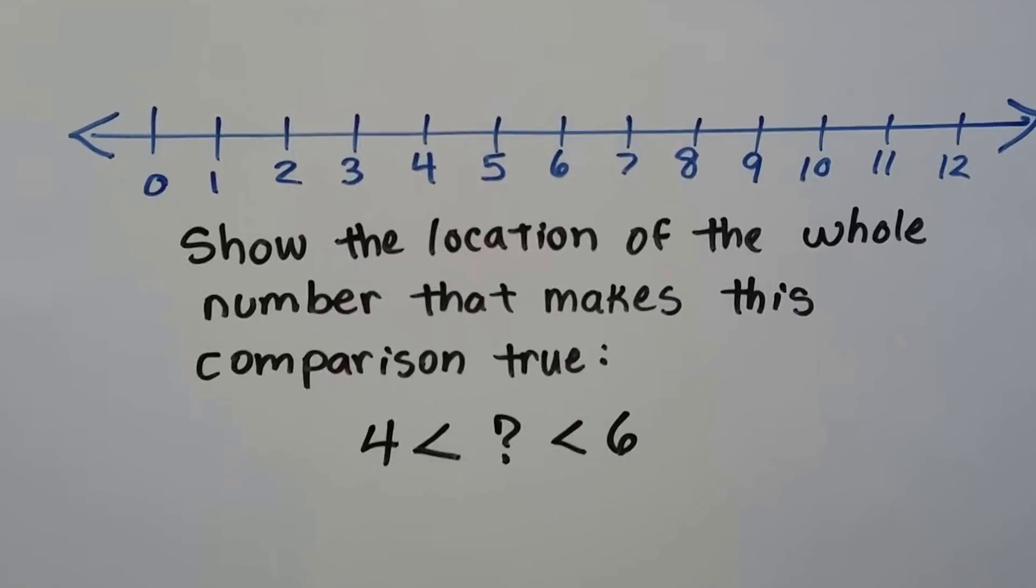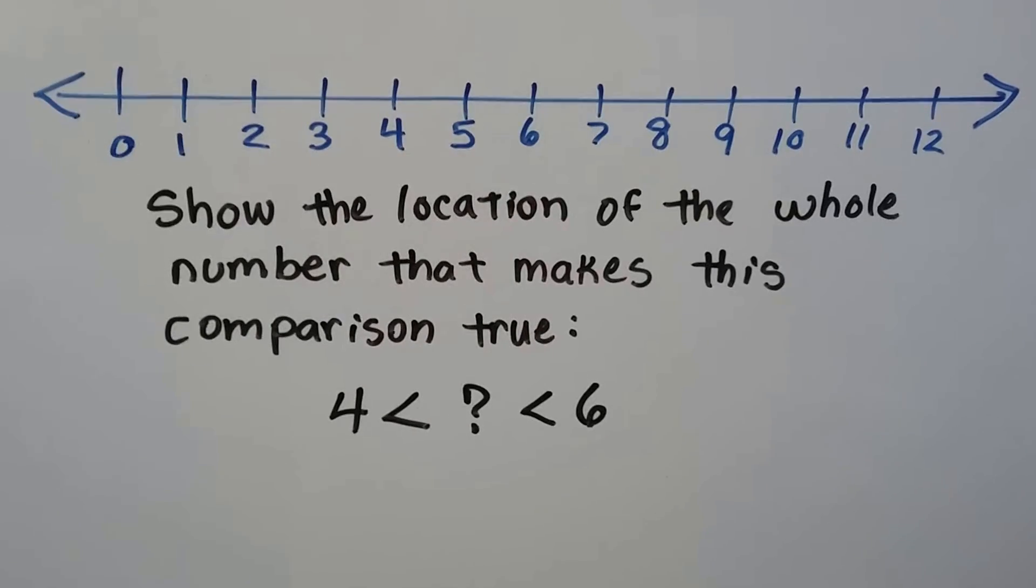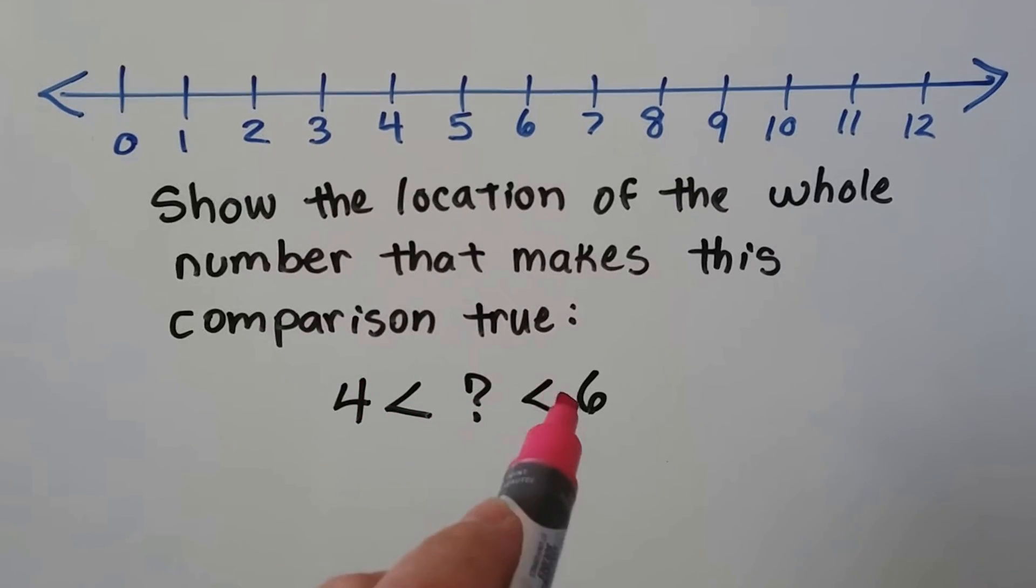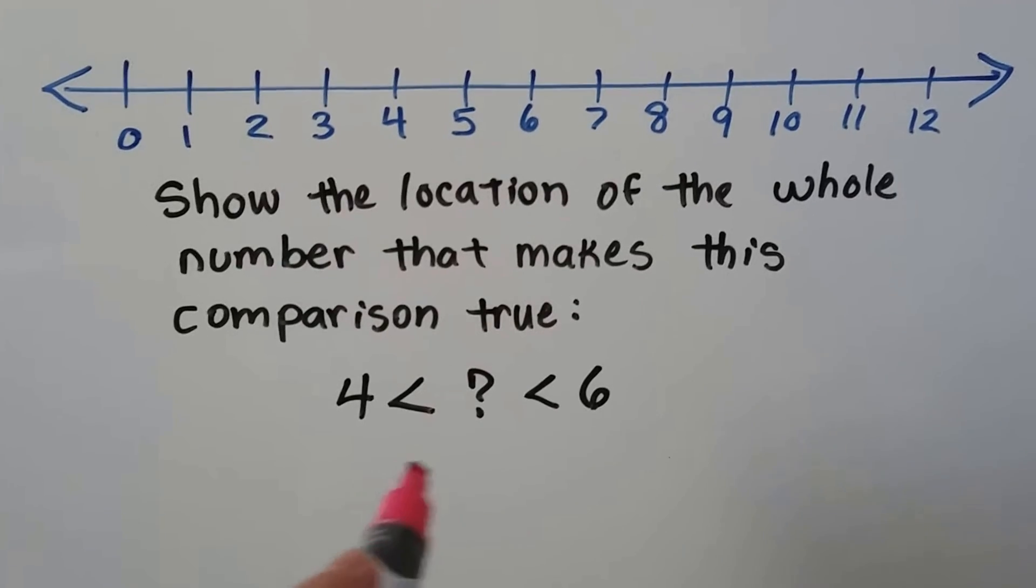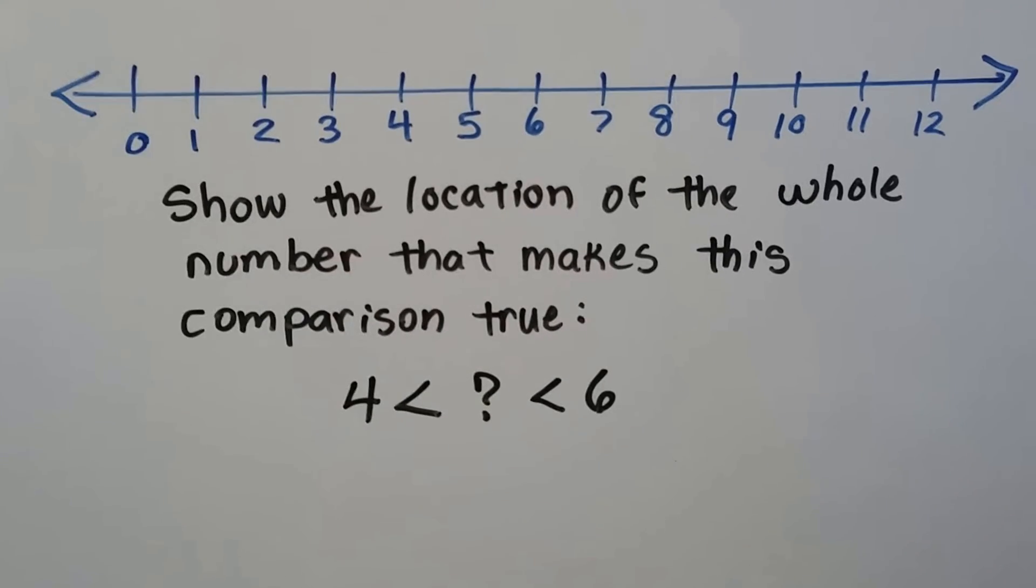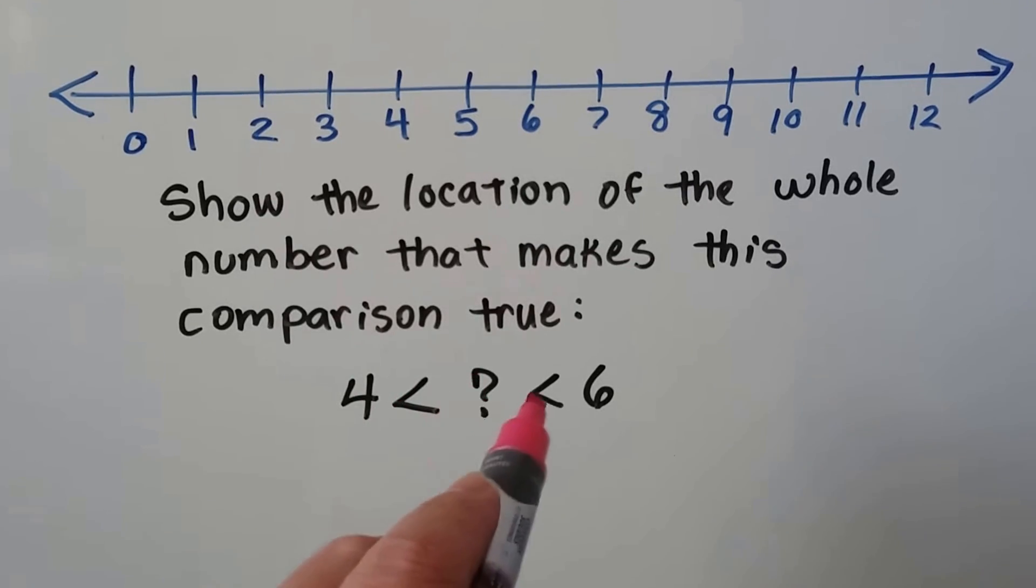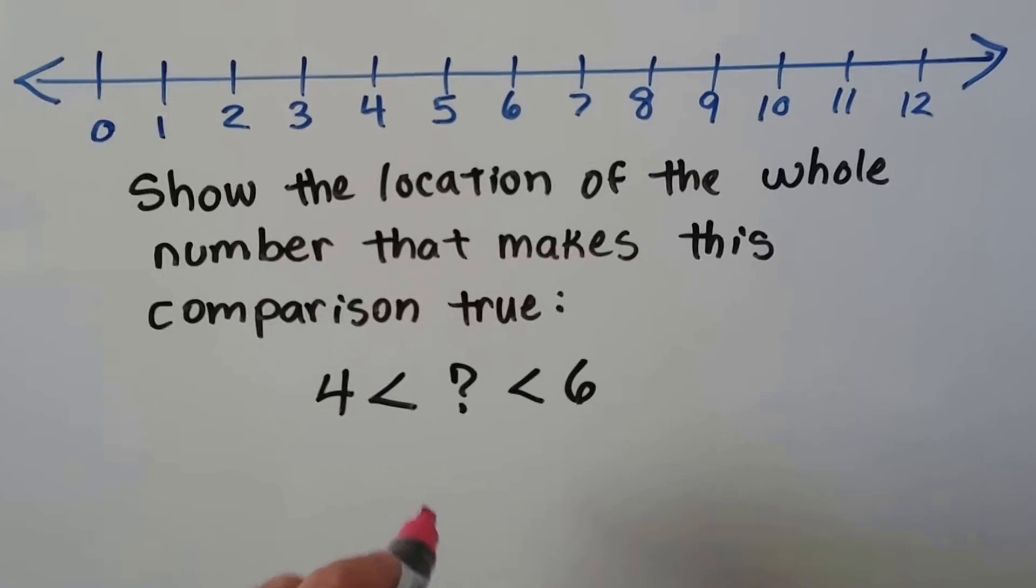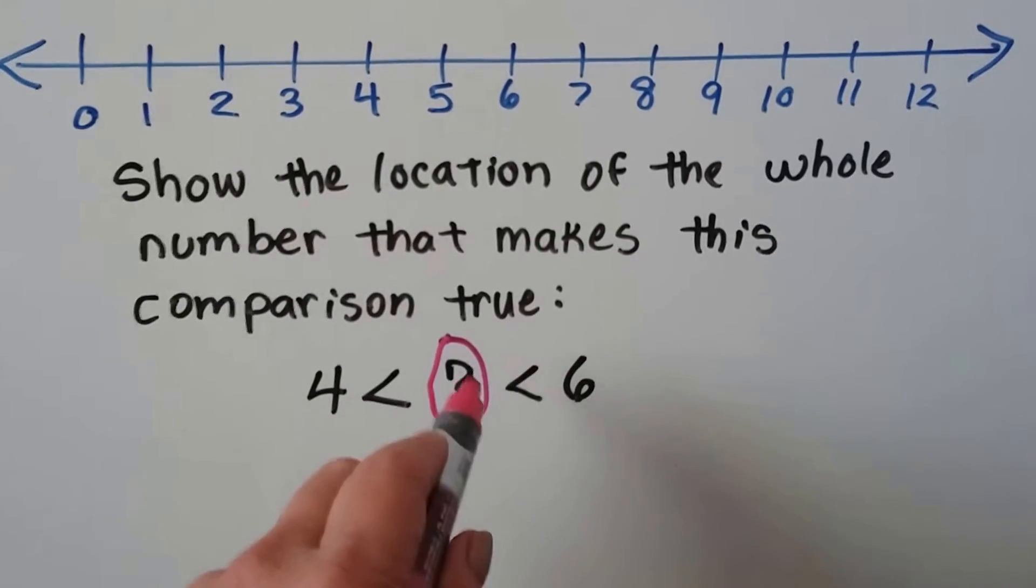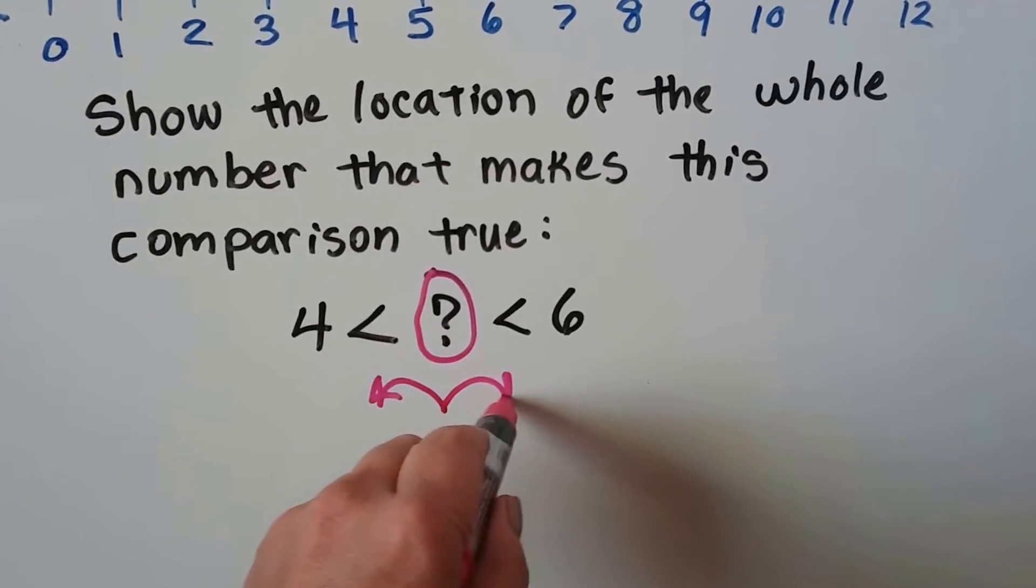This one's a little trickier, so you got to use your thinking cap. It says show the location of the whole number that makes this comparison true. There's some number that is greater than 4 but less than 6. When you see these, this is called an inequality. We're going to get into these when we get into algebra. You start by reading the middle first. You don't say 4 is less than a number that is less than 6. You start reading from the center here. Some number is greater than 4 and less than 6. So you're going to go this way and then this way as you read it.